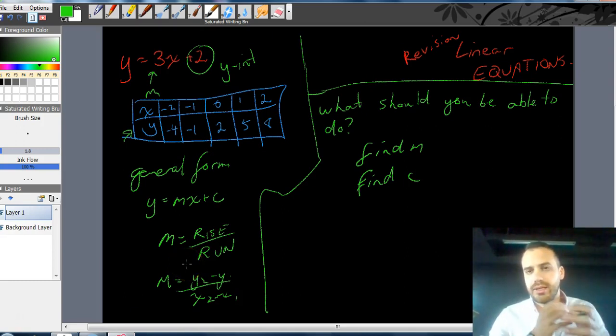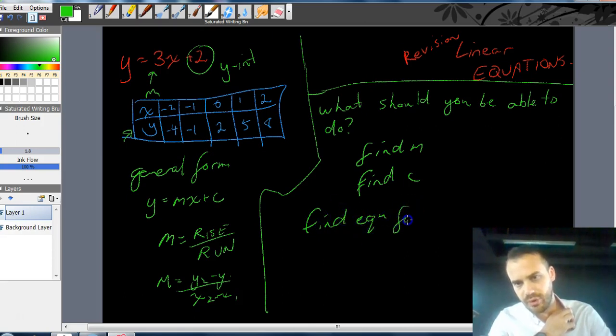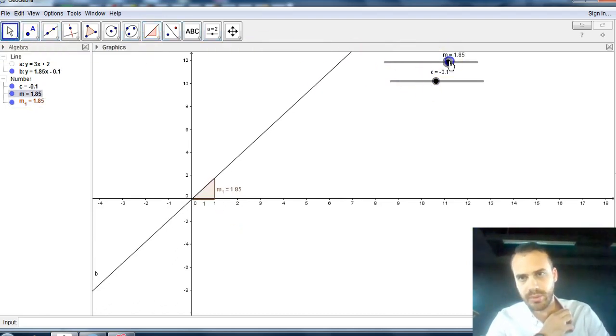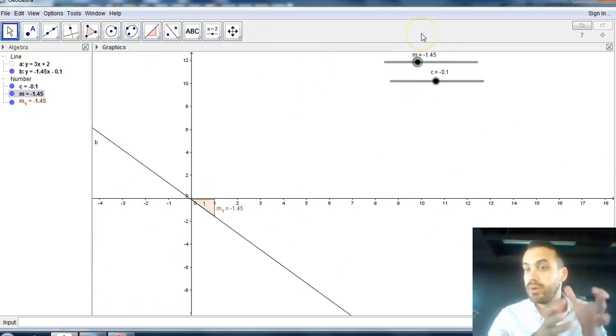This is where things get a little more complicated now. You should be able to find the equation from a graph. So, in other words, you should be able to look at any line whatsoever. You should be able to look at whatever line that is, and as long as you know a couple of points on that line, or you know the y-intercept and one point, or you know a point and a gradient, you know a bunch of stuff, you should be able to figure out what the equation is.